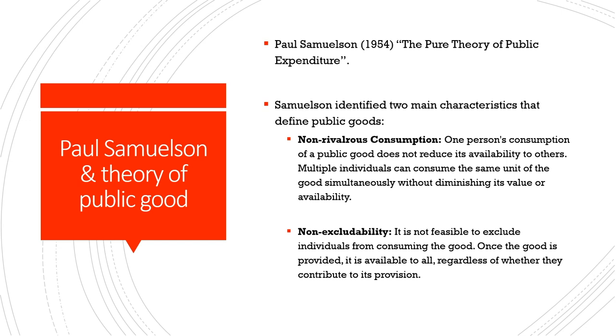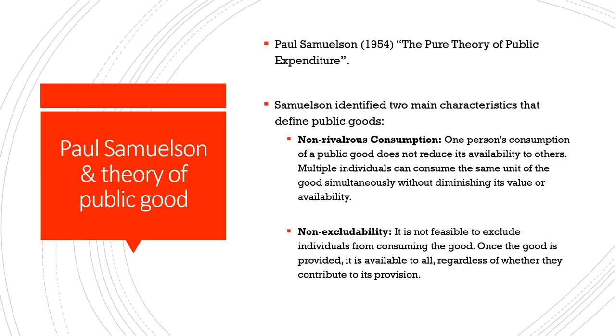The second defining characteristic Samuelson talked about is non-excludability, meaning it is not feasible to exclude others from consuming a good. Since the good has already been provided and it is prohibitively costly to exclude others from its utilization, once the good is provided it is available to all regardless of whether someone contributes to its provision. In economics, this means the marginal cost of provision of that good is zero, making it prohibitively costly to exclude anyone. These two characteristics — non-rivalrous consumption and non-excludability — define public goods.